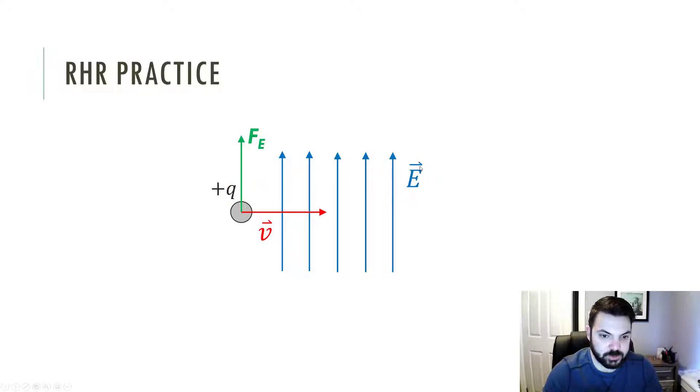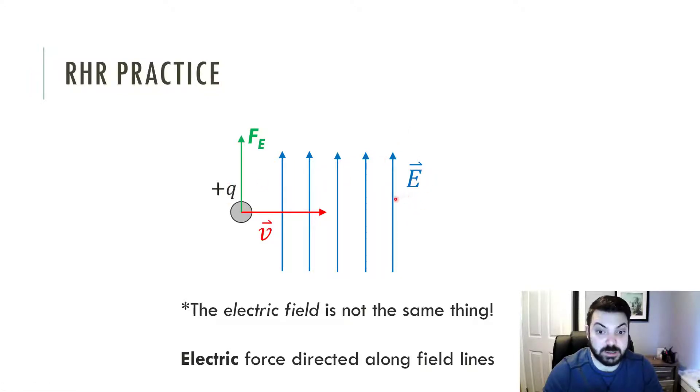Because remember the rule for an electric field is it just shows me which way a positive charge would be pushed. That's how we define the direction of an electric field back in the day. So I don't need to use any kind of crazy right-hand rules. If I got a positive charge in an electric field going up, that literally means it will push any positive charge in this location in the direction of the field.